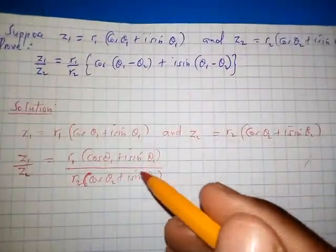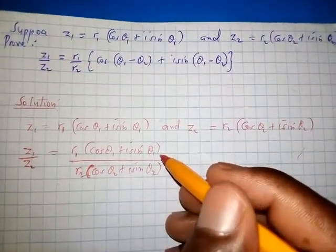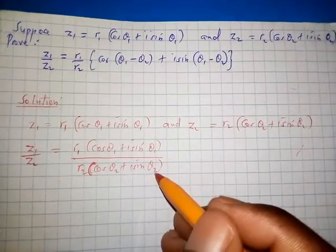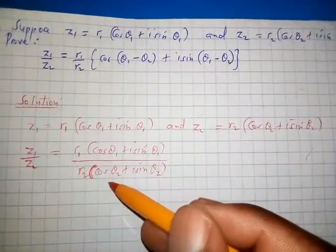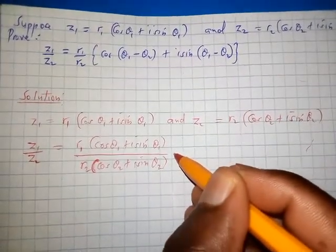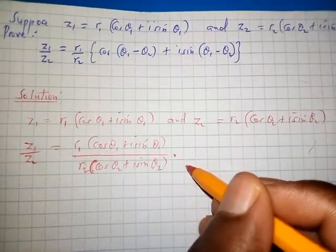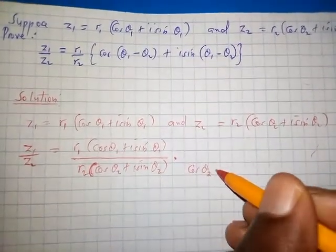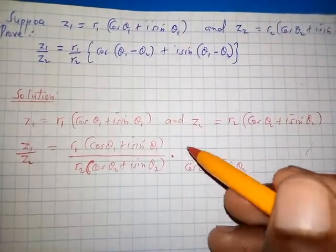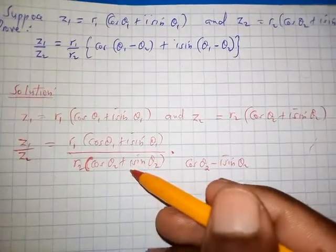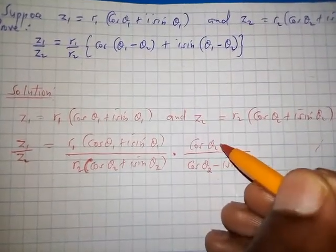The next step is to rationalize. We do this by multiplying both the numerator and denominator by the conjugate of (cos theta2 plus i sine theta2). The conjugate of (cos theta2 plus i sine theta2) is (cos theta2 minus i sine theta2). So we multiply numerator and denominator by (cos theta2 minus i sine theta2).